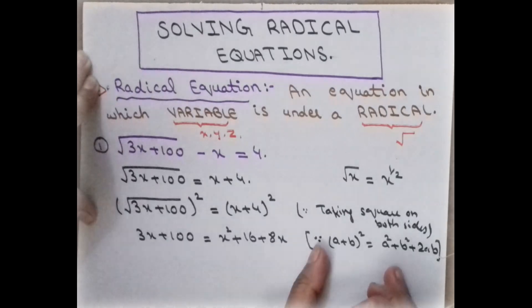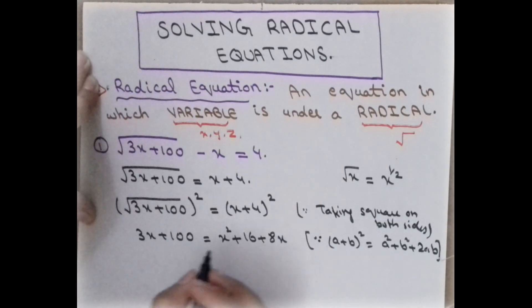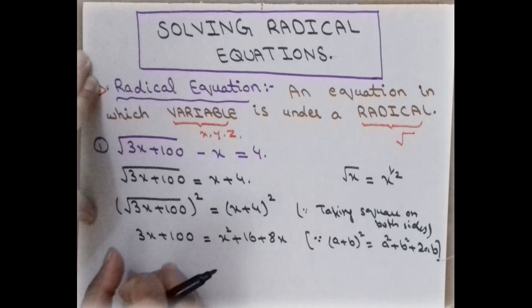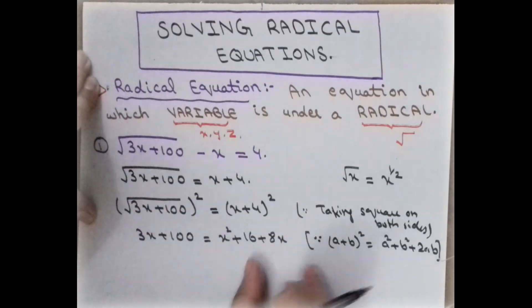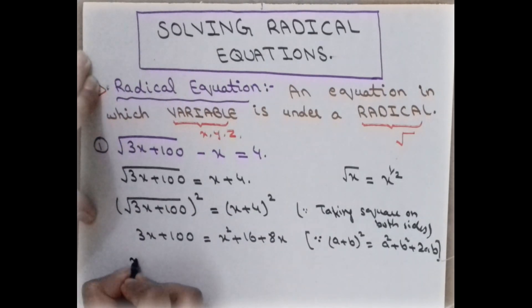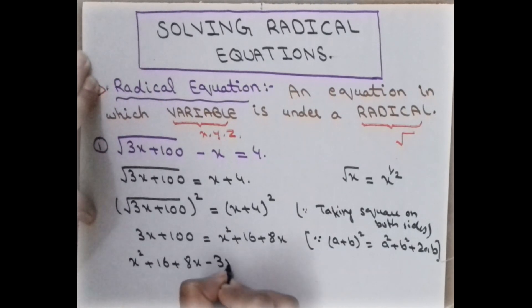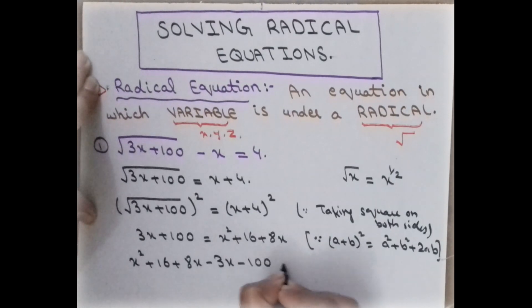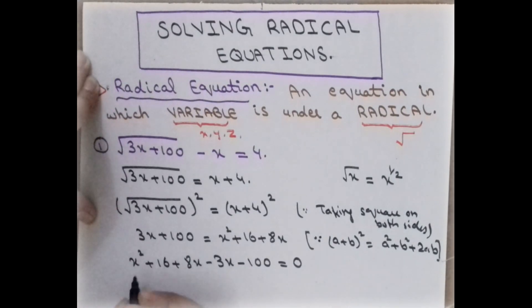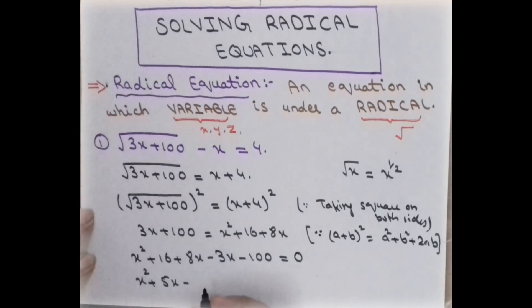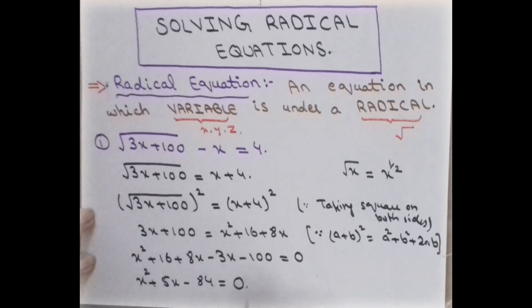Now to solve this, we take all terms to the right-hand side. We can write: x² + 16 + 8x − 3x − 100 = 0, which simplifies to x² + 5x − 84 = 0.